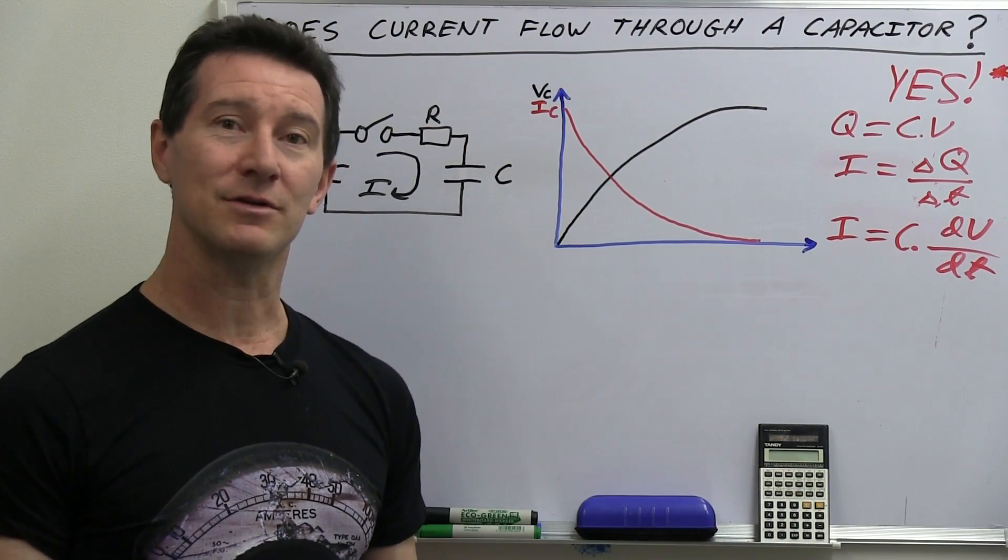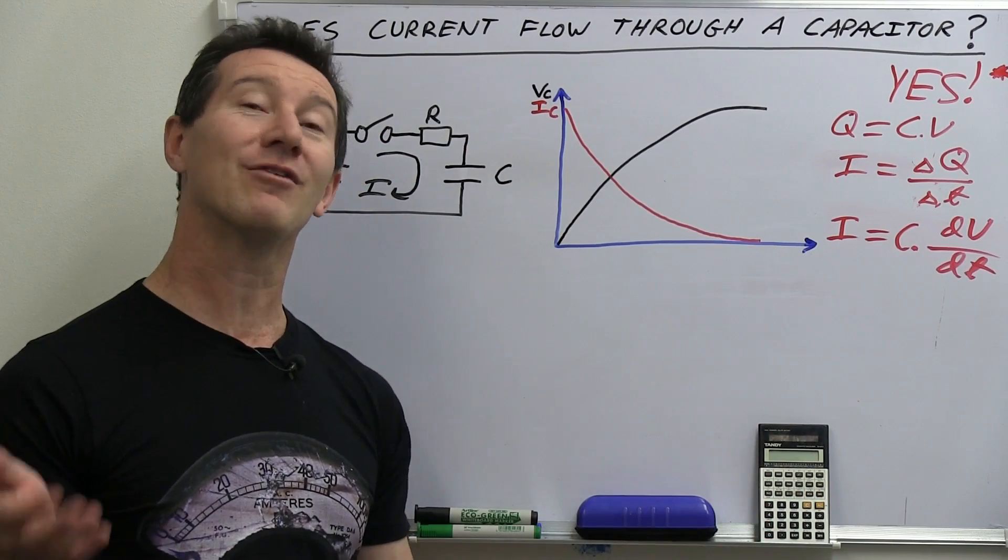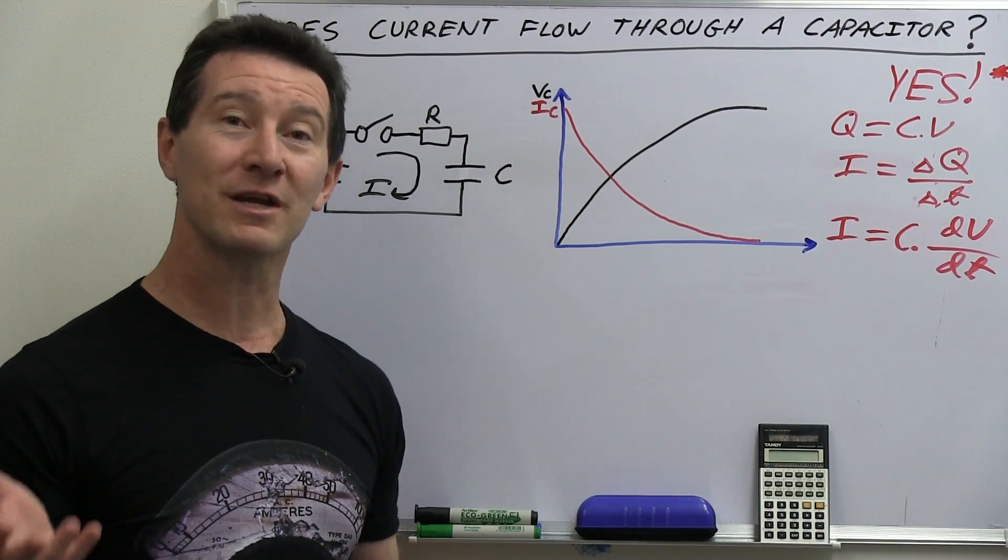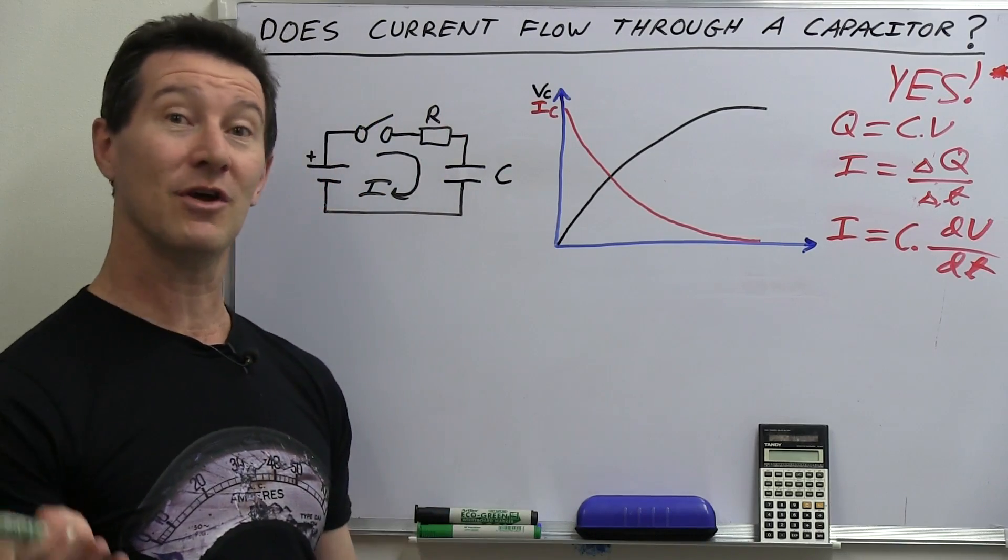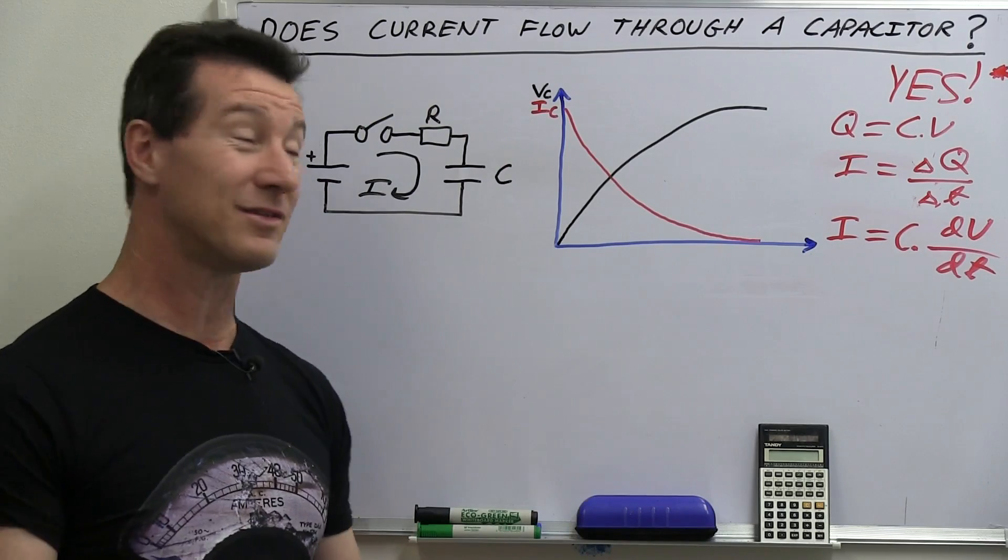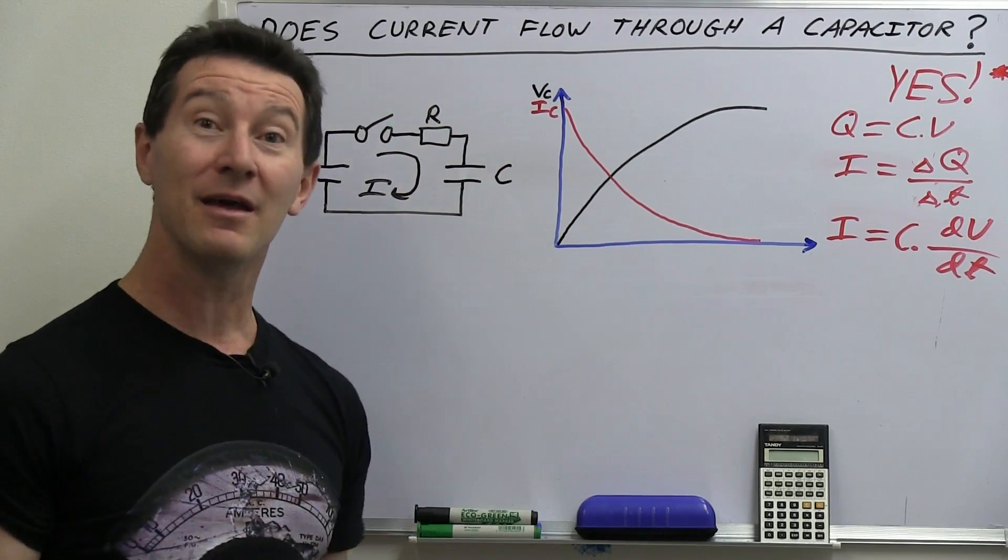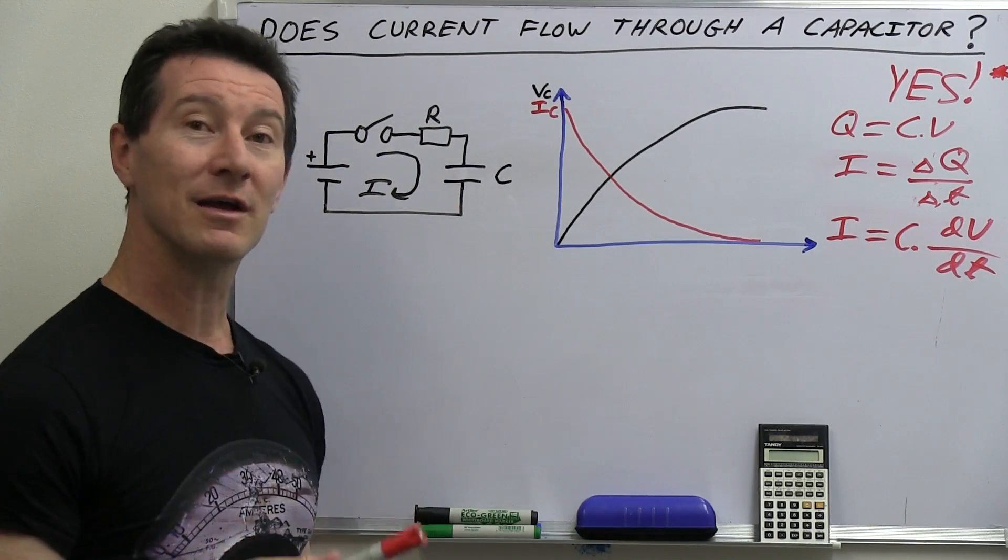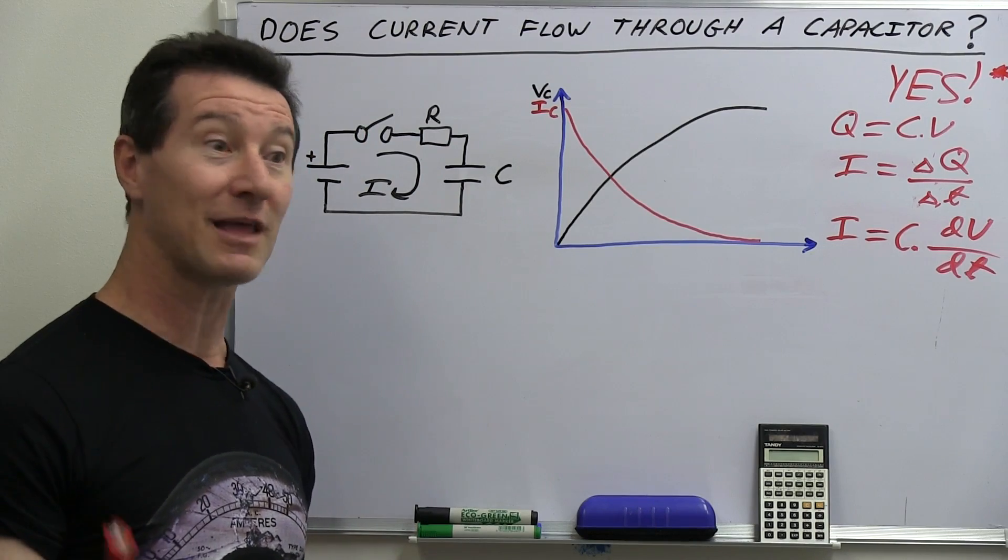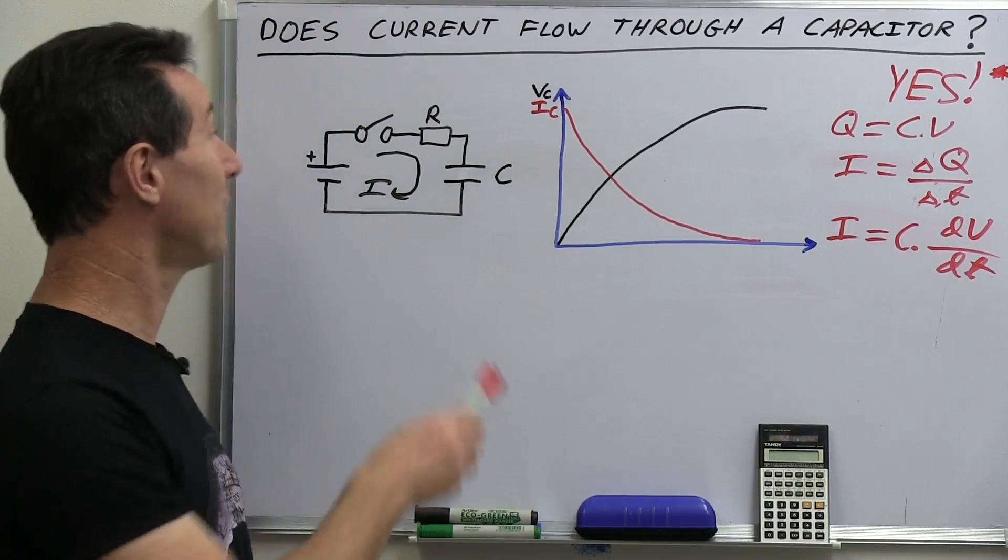Well, electronics 101 again, right? Current is the flow of electric charge. And when you have conductors like you do in electronic circuits, they're made up of conductors of wires and resistors and stuff like that, then it's the flow of electrons through that circuit.